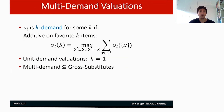In this talk, we will mainly focus on the class of multi-demand valuations. A valuation V_i is called K-demand for some number K if it is additive on the top K items in the bundle. So V_i of some bundle S equals the maximum over all subsets S' of S of size at most K, summing up the values of the items in S'. When K equals one, this definition simply collapses to unit demand. I also want to mention that multi-demand is a subclass of gross substitutes.